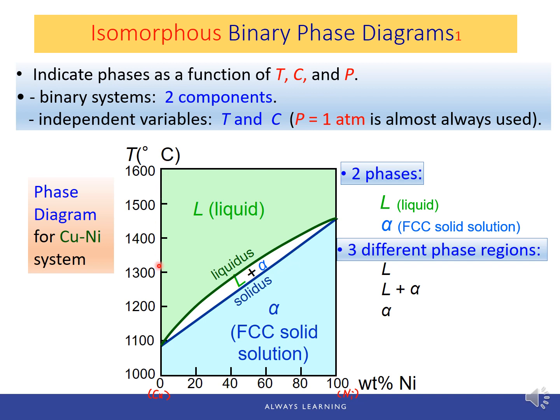On the vertical boundaries, when the composition is 0% nickel we have 100% copper — and that temperature is the melting point of copper. Below that melting point we have solid copper; above it, liquid copper. Similarly, on the right boundary at 100% nickel, that point is the melting point of nickel.